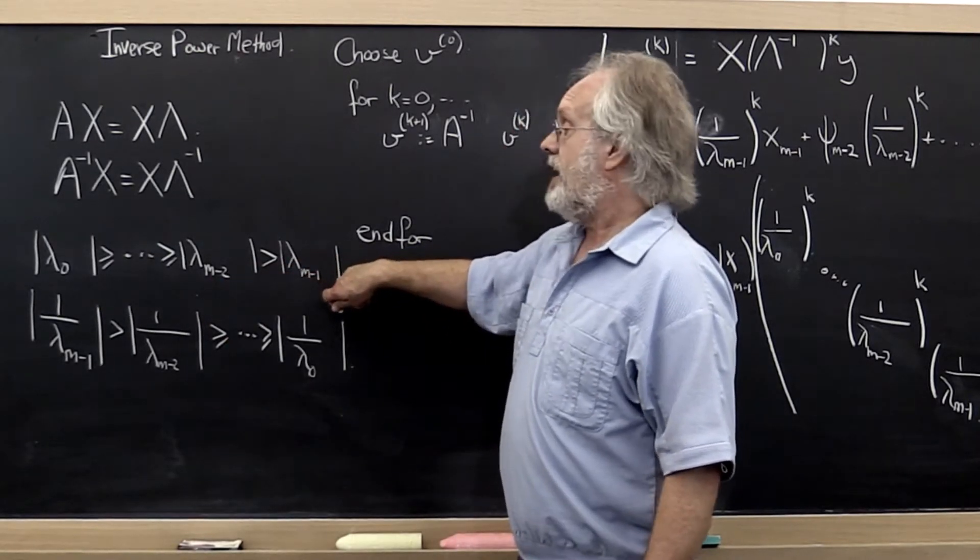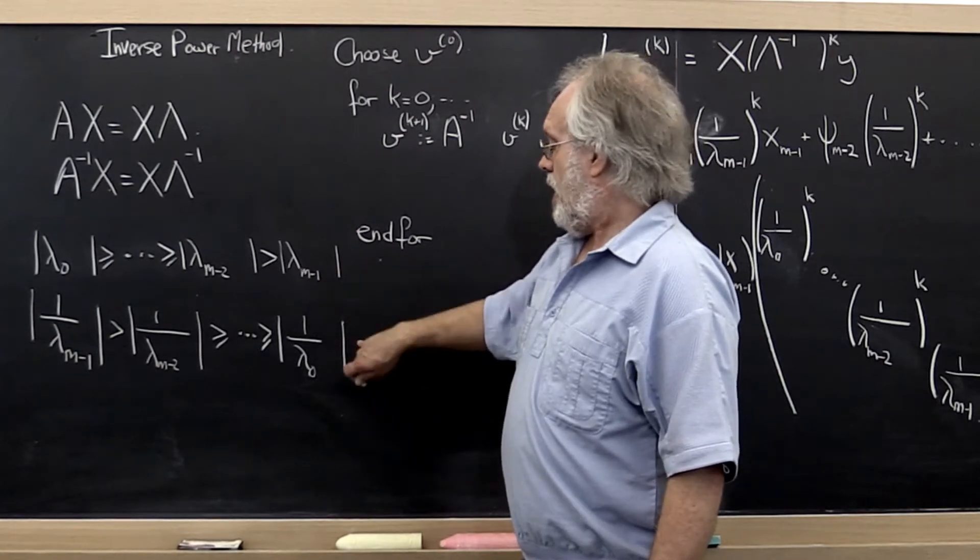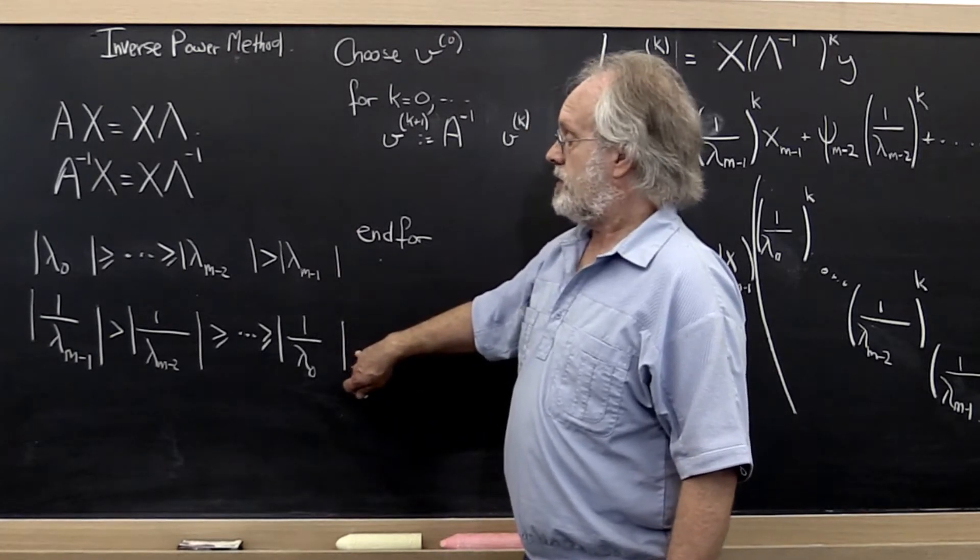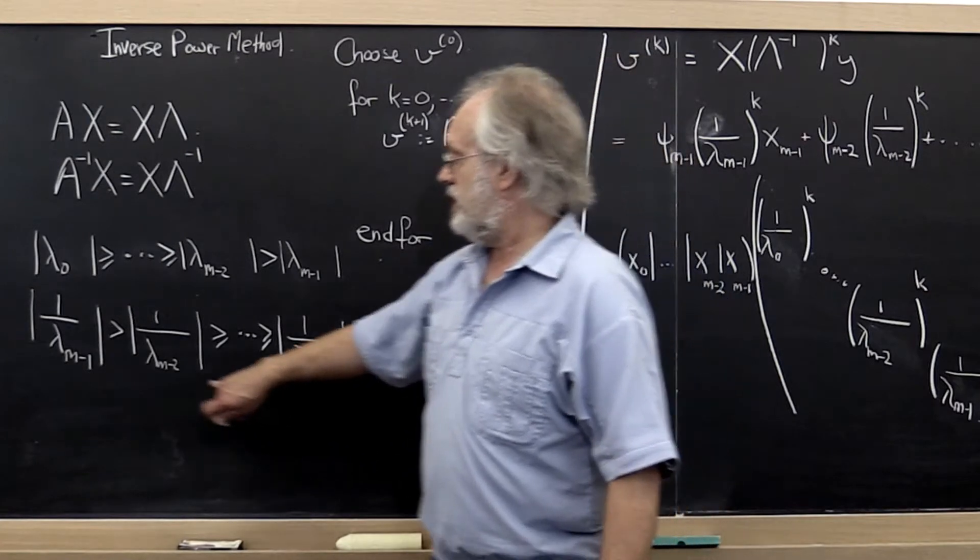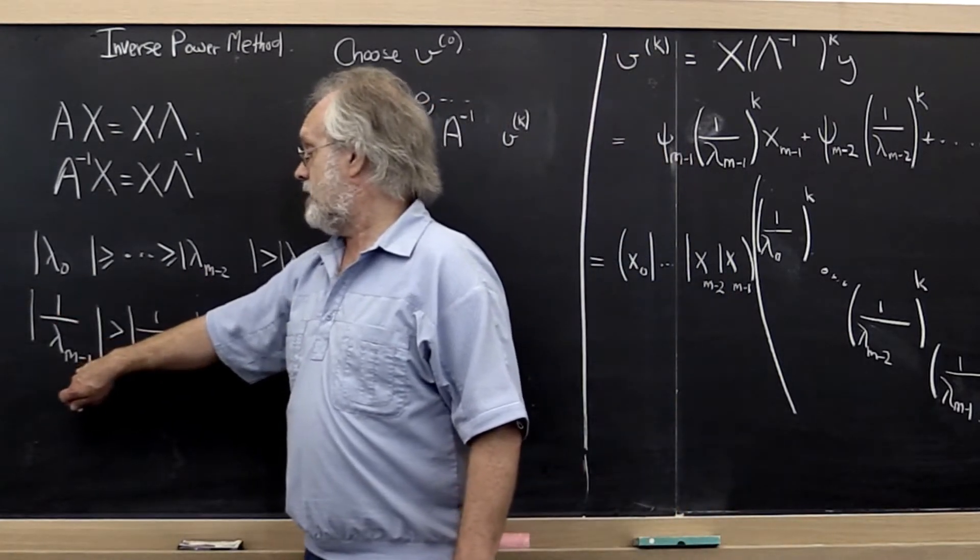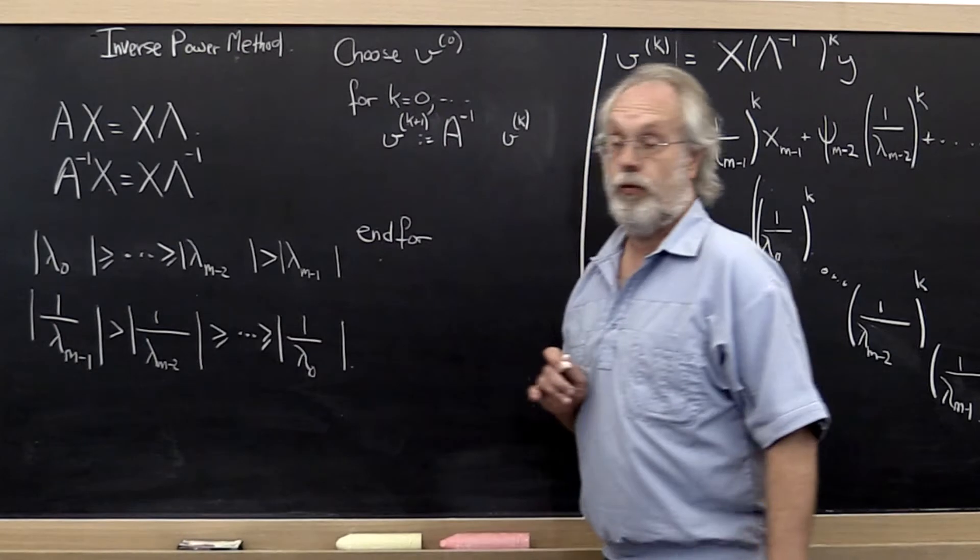If these are the eigenvalues of matrix A, then the eigenvalues of matrix A inverse have the property that 1 divided by lambda m minus 1 is the largest in magnitude and so forth.